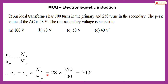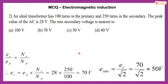We can put the values. EP is given as 28 volts, which is the peak value of alternating voltage across the primary. Number of turns in the secondary is 250 and in the primary is 100. So the secondary peak voltage is 70 volts. But this is not the final answer because you have to calculate the RMS voltage. We divide 70 by root 2, giving approximately 50 volts.